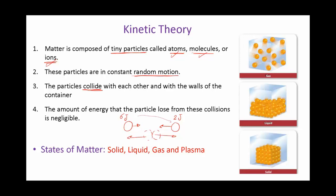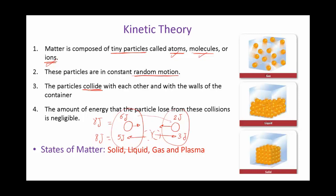When they rebound back, let's say the first one will have a kinetic energy of five joules and the other one will have three joules. So the total kinetic energy is conserved during the collision. The energy before collision is eight joules — six plus two — and after collision also five plus three, it's eight joules. So there is no loss during the collisions of particles, but the energy is transferred from the one with higher kinetic energy to the one with lower kinetic energy.